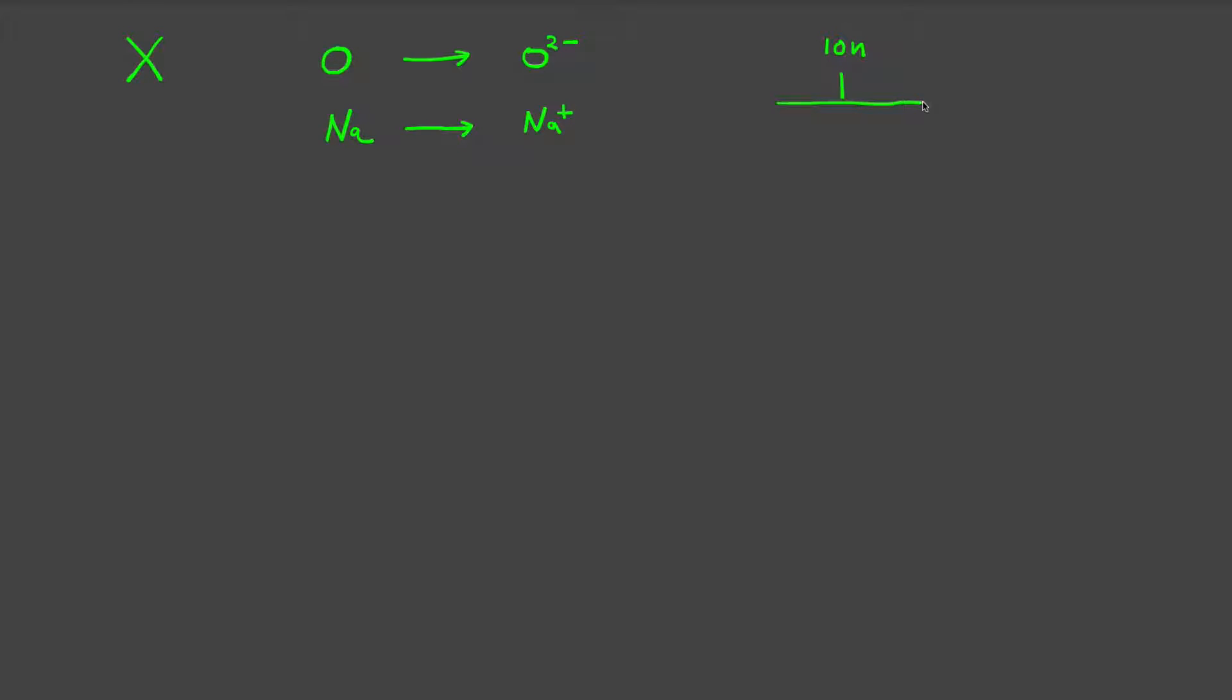And there are two flavors of ions. There are positive charged ions, as you can see with sodium ion there, and there are negative charged species, such as oxide. An ion that carries a positive charge is called a cation, and an ion which carries a negative charge is called an anion.